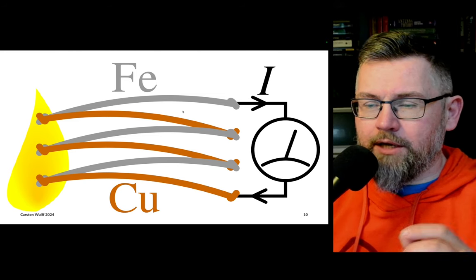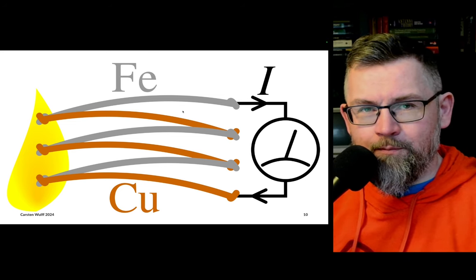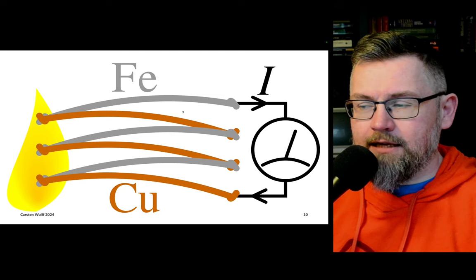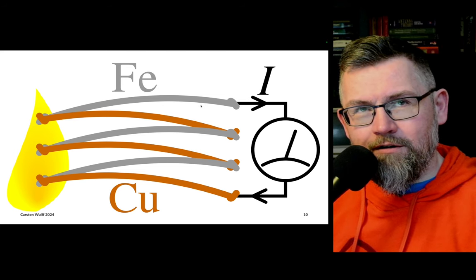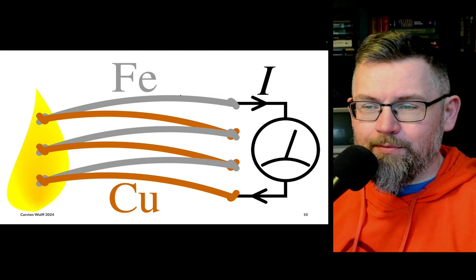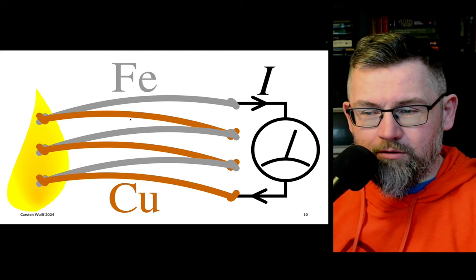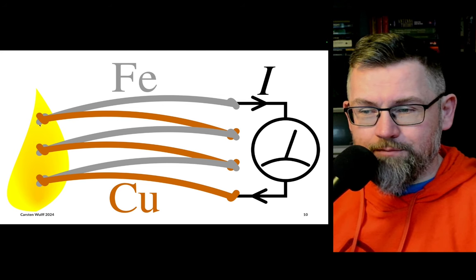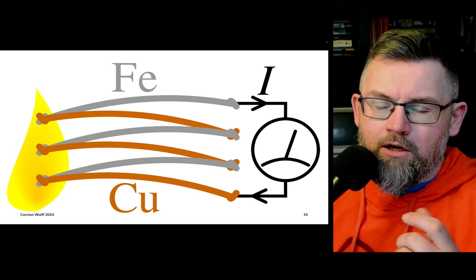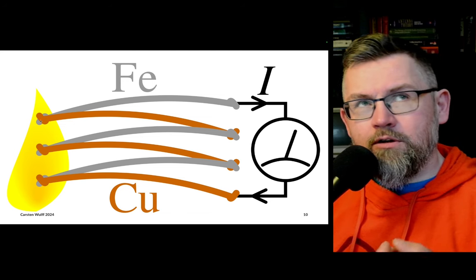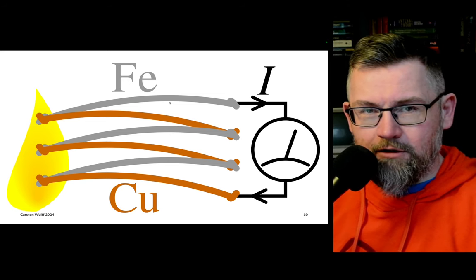What we're looking at now is a thermoelectric generator, using the difference in temperature to generate a voltage difference. The setup requires some iron wire, some copper wire (the orange one), and a heat source. At the hot end, you can consider the electrons in the metal as a kind of gas — an electron gas — and at the hot end the electrons move at a higher energy, faster, with a higher energy state.